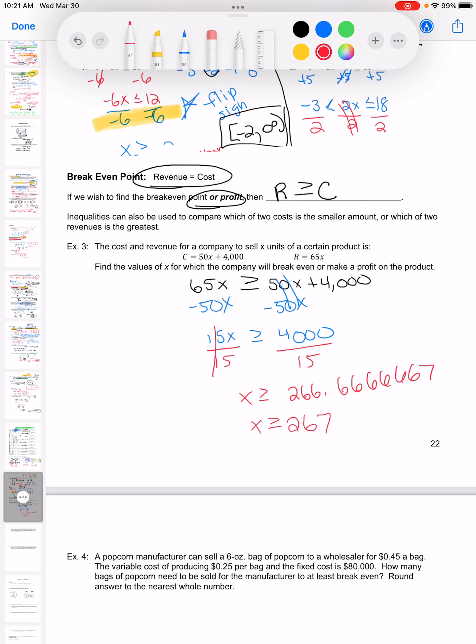I'm going to write this as interval notation, so it has the equal to, so I'm going to have a bracket 267 to infinity. This means going back to these directions here, you want to find the value that we would break even or make a profit, so it would be from the 267 on upward. We could sell infinity of these things, but we had to sell at least 267 units to break even.